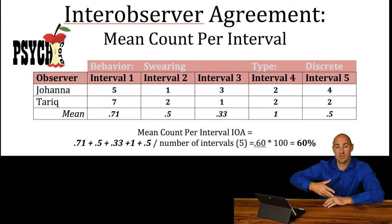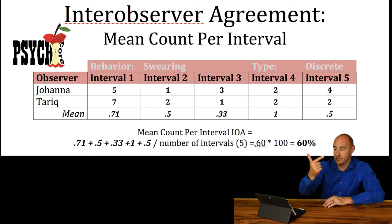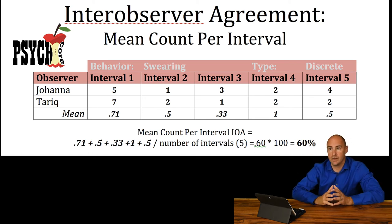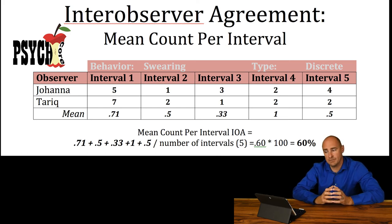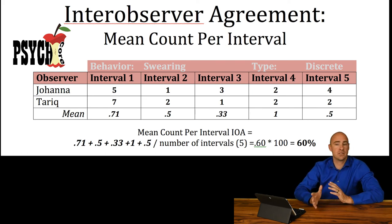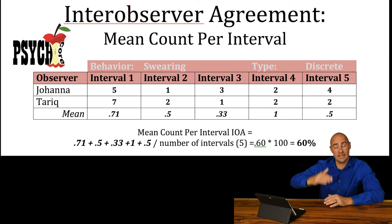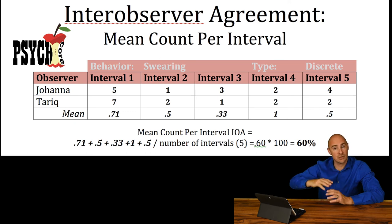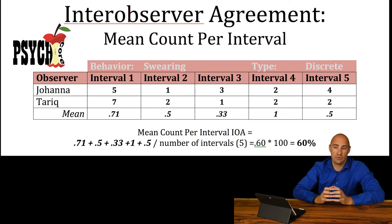We add all those up: a hundred plus zero plus a hundred, then divide by three. So you end up with around 66-67% agreement overall. It doesn't have to be a hundred or zero — it could be 22%, 25%, whatever. You're just going to average each one of those ratios, those percentage agreements between each interval, and then get a number overall.